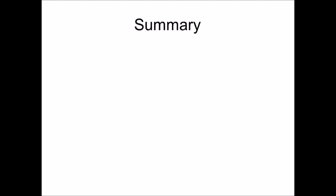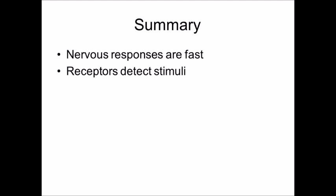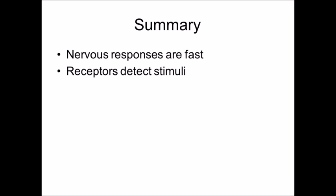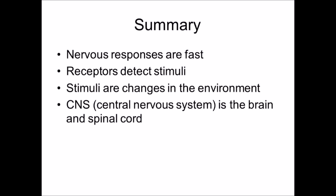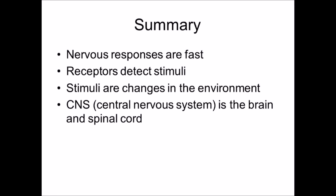To summarise, nervous responses are fast acting, providing very quick responses to changes in the environment. Receptors are things that detect a stimulus, and a stimulus is a change in the environment. Your central nervous system is your brain and your spinal cord, and your peripheral nervous system consists of all of the other surrounding nerves.